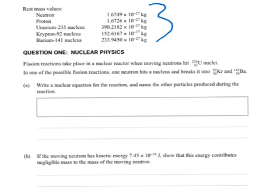Fission reactions take place in a nuclear reactor when moving neutrons hit uranium-235 nuclei. In one of the possible fission reactions, remember fission means splitting, like a fissure or a crack opening up, one neutron hits a nucleus and breaks it into krypton and barium of those numbers.